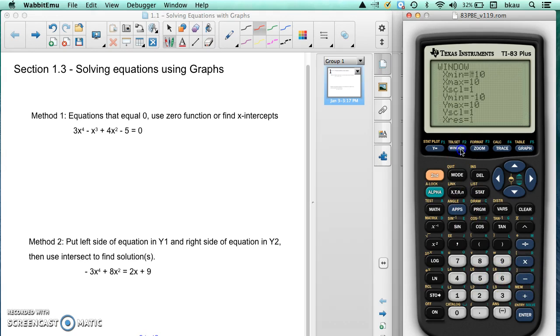We're going to look at our window. Our window is set to the standard. If you want to get to that, you can hit zoom and number 6. That'll take you to the standard window. We'll take a look at this graph. It looks like there might only be two solutions here.